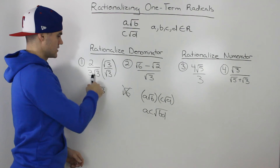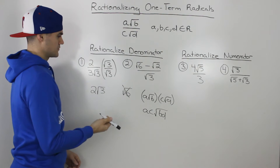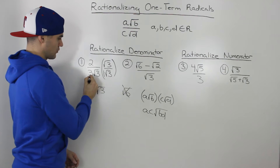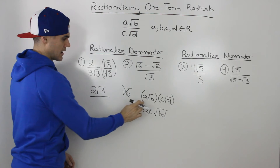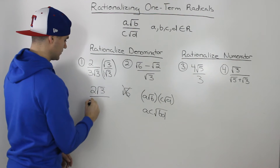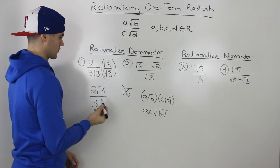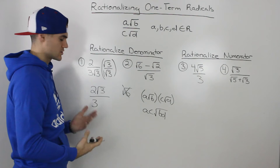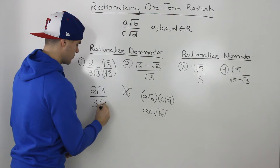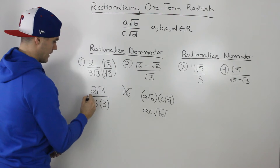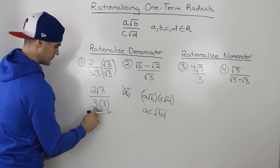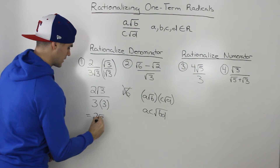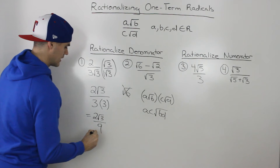Multiplying the denominator: 3 root 3 times root 3. There's like a 1 in front of the root 3, so 3 times 1 — the numbers outside the radicals multiply together — gives us 3. Then root 3 times root 3 gives us root 9, and the square root of 9 is just 3.